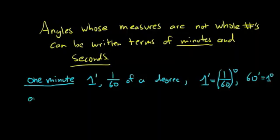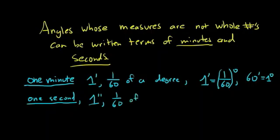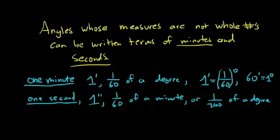Then we have seconds. So what is one second? A second is a one and it's got two dashes. And a second is 1/60th of a minute which makes sense, because 60 seconds give you a minute when you're thinking of time. So one second is 1/60th of a minute or 1/3600th of a degree.